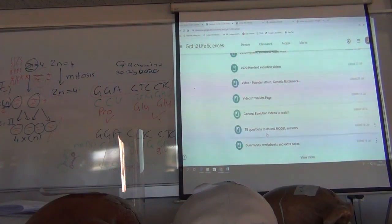And at the bottom here, there's textbook questions to do and model answers. Read the question in the textbook, do it, write it down, keywords or whatever. Just remember, do you have enough time, and then look at the model answer. And then in this folder here, summary, worksheets and extra notes.